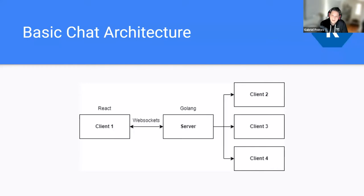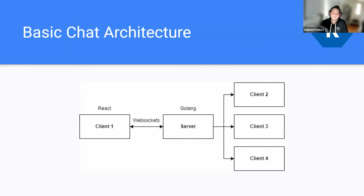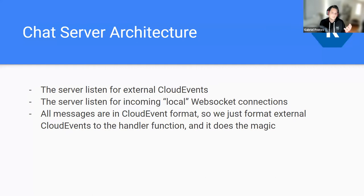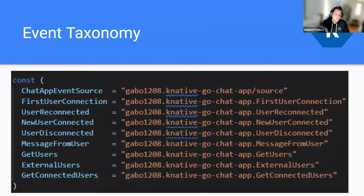The best way I thought was to make this pet project a Golang-based chat. I already knew React, so that was the easy part, but connecting everything together was the real challenge. The server is Golang, serving a React build application on the frontend, and communicating between frontend and backend using WebSockets. The server listens for external cloud events, listens for incoming local WebSocket connections, and reacts practically the same to both local and external cloud events.